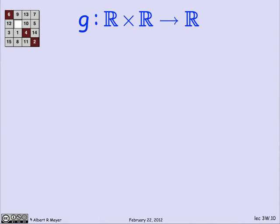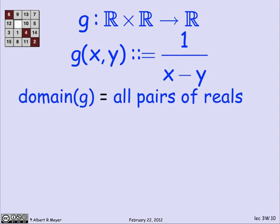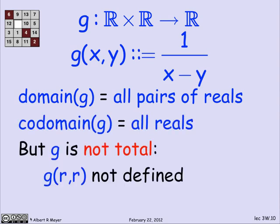So let's look at a calculus-like example. Here's a function g that takes a pair of reals and returns a real. It maps the real plane into the real line. And the definition of it is g of xy is 1 over x minus y. Now, the domain of this function g is, in fact, all the pairs of reals. That's what it means to say that it goes from r cross r, shorthand r squared, to the codomain r. The codomain is the set of all reals. But this g is obviously not total because 1 over 0 is not defined, which means that on the 45 degree line, g is not defined. g of r r is not defined.